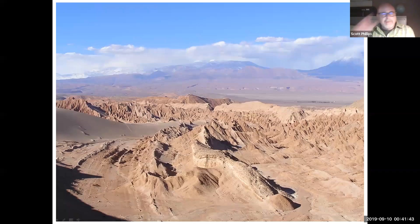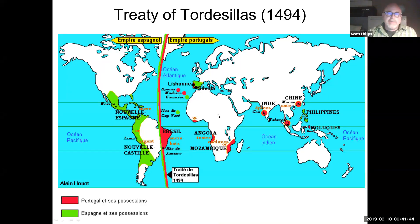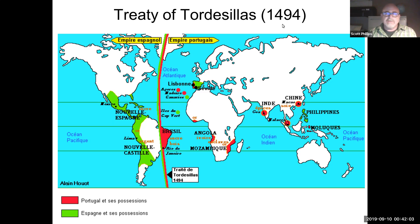Welcome back. I want to talk a little bit about the colonial period in South America. And if you recall, we've talked a lot about the Spanish during the colonial period in middle America. And in South America, it's going to be slightly different. We're going to have the Spanish, but also a significant presence of the Portuguese. And a lot of this has to do with the treaty from way back in the 1490s called the Treaty of Tordesillas.